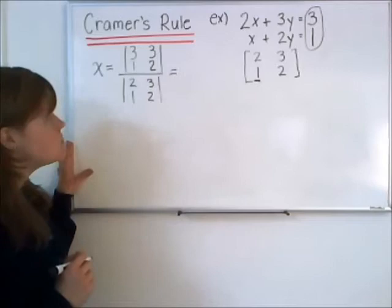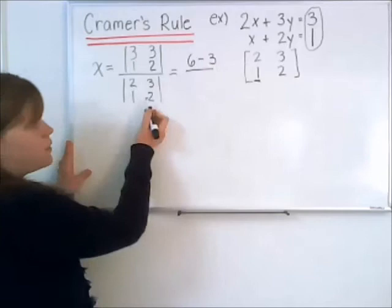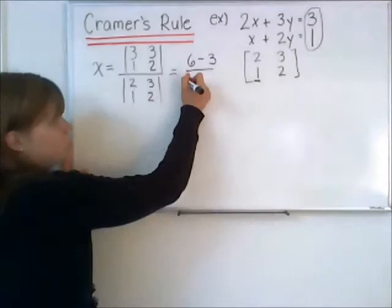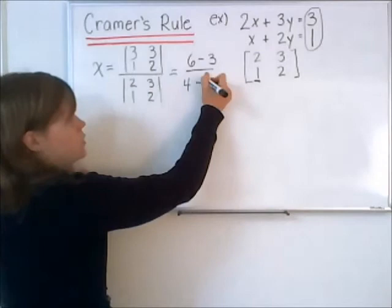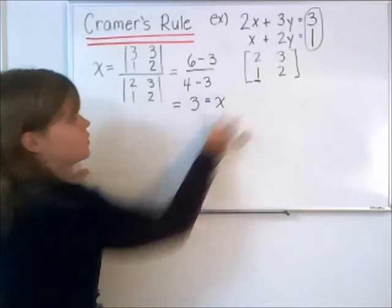Our next step: these two are just simple 2 by 2 determinants. In the numerator, we get 3 times 2, which is 6, subtract 3 times 1, which is 3. We put that all over the determinant we calculate here: 2 times 2 is 4, minus 3 times 1, which is 3. When we do that calculation, we get 3 over 1, which equals 3. That represents the solution for the x value.